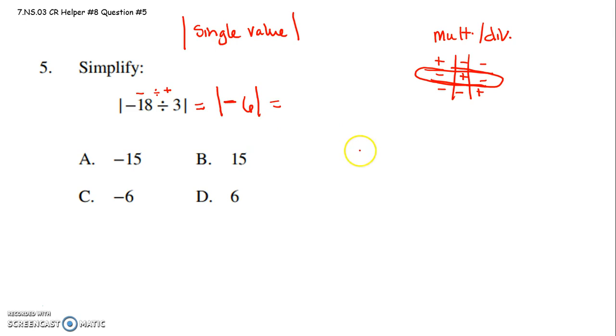Well, what does absolute value mean? Here's your absolute value symbols. Absolute value means your distance from 0.